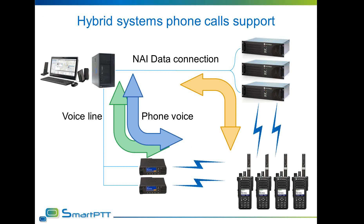Hybrid systems now include support for phone calls over control stations. Each group in a hybrid system requires a dedicated control station, and at least one additional control station is required for private voice calls. Phone interconnection is supported based on interruptions, and outgoing calls can be made via TMS or DTMF. Voice is transmitted over control stations without NAI, requiring no phone interconnection license on repeaters or activation of phone calls over AI. The number of simultaneous phone calls is limited by the number of available control stations.